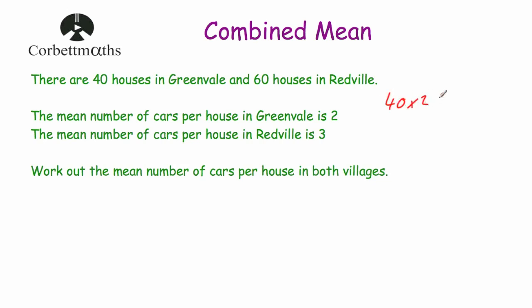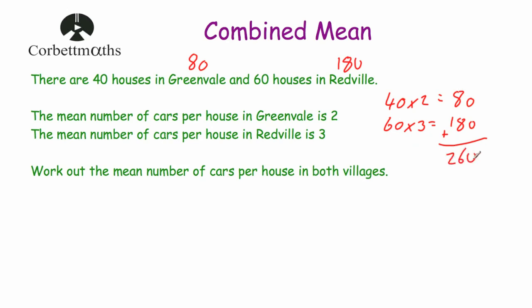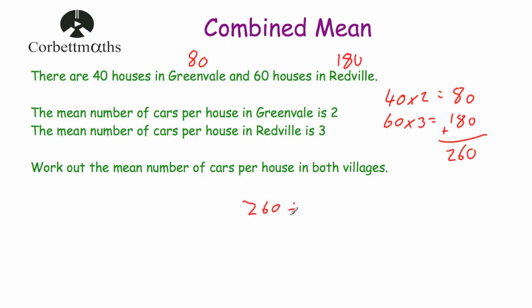This mean of 2 in Greenville has been found by adding up the number of cars in each of the 40 houses and then dividing by 40. So if we multiply this 2 by 40, we will find the total number of cars in Greenville. So 40 multiplied by 2 is equal to 80 — so that means there are 80 cars altogether in Greenville. Now, in Redville, the mean of 3 has been found by adding up the number of cars in each of the 60 houses and then dividing by 60. So 60 multiplied by 3 is 180. If we add those two numbers together, the 80 cars in Greenville and the 180 cars in Redville, that gives us 260 total cars in both villages. So 260 divided by 100 houses equals 2.6 — the mean number of cars per house is 2.6.